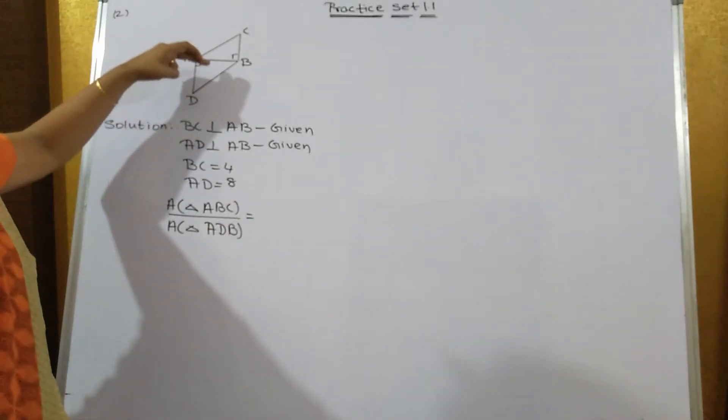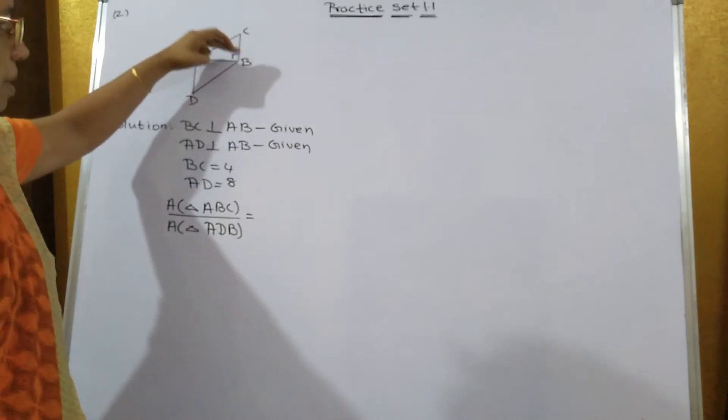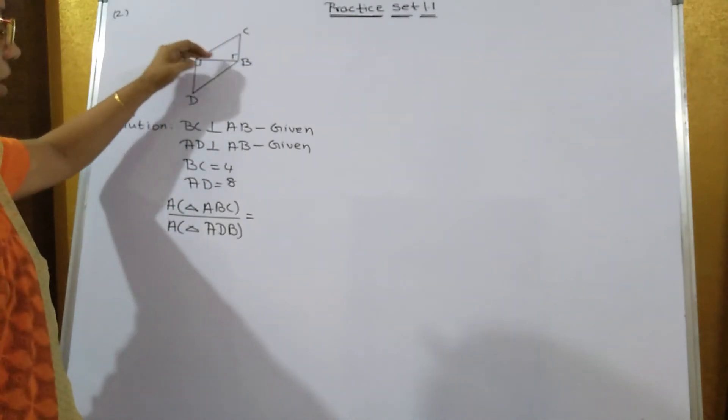Now sum No. 2, the diagram is this way and they have given BC is perpendicular to AB and AD is perpendicular to AB.